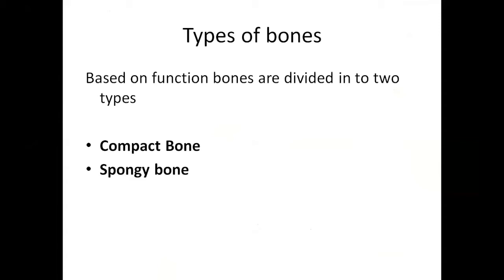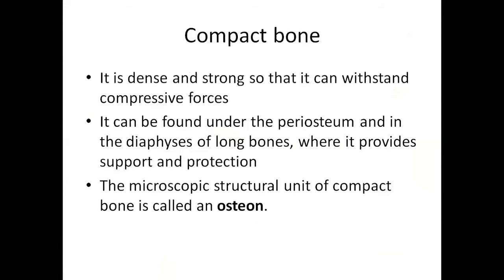The first is compact bone and the second is spongy bone. Compact bone is basically dense and strong so that it can withstand compressive forces. If you look at the structure of the bone, it is very dense and strong. It can be found under the periosteum and in the diaphyses of long bones.